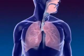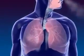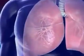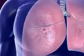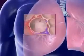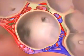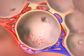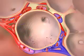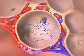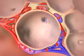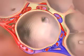Oxygenated air goes from the nose to the pharynx, larynx, trachea, bronchus, and alveoli. By the process of diffusion, oxygen in the air moves from the alveoli to the capillaries. Carbon dioxide moves from the capillaries to the alveoli and is exhaled. This process is called respiration.